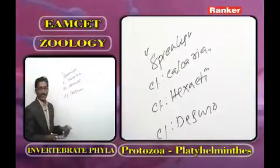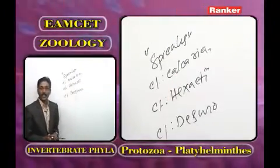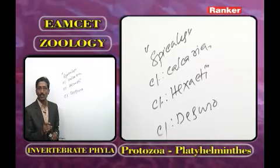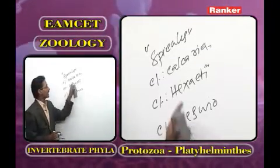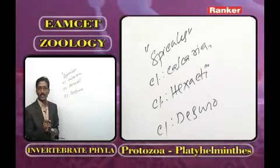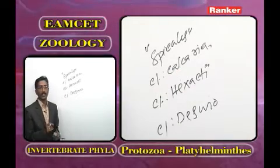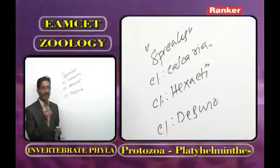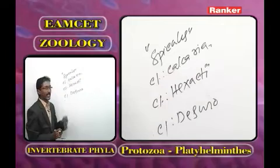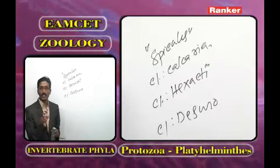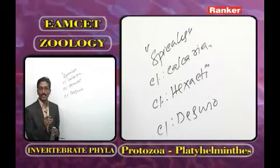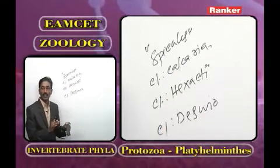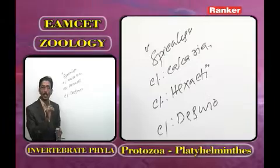In class Calcarea, shallow marine water sponges are present; spicules are made by calcium carbonate. Larval forms are calciblastula and amphiblastula. Examples include Leucosolenia and Sypha. All are solitary and some are colonial sponges.